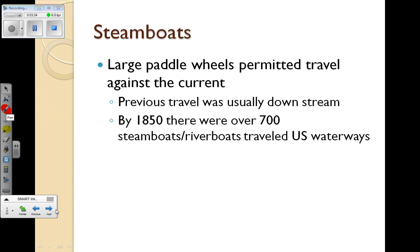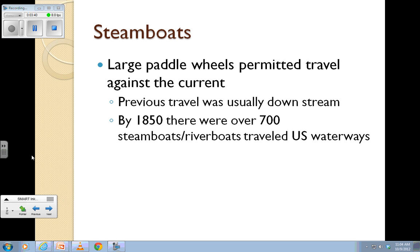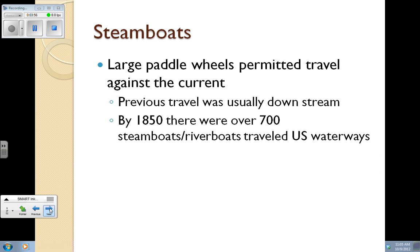The other big development is the steamboat. The steamboat allows people to travel up river, not just down river. Prior to this, if you took a boat down river, you had to walk back to wherever you were going. The expansion of steamboats by 1850 really allows commerce to expand up and down the Mississippi, up and down the Erie Canal, and across the East Coast and the Ohio River Valley.